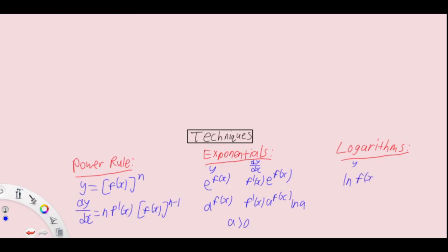Logarithms are very similar to exponentials, with two types: ln fx and log base a of fx. The derivatives are simply f prime over fx. Same thing for log a fx, just that you times by one over ln a, again a bigger than zero.